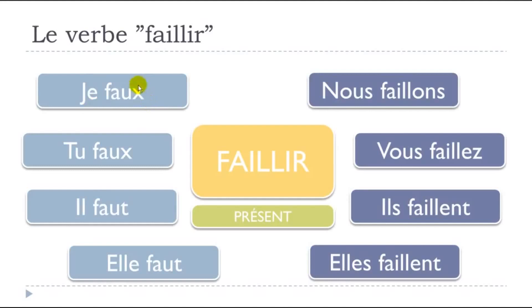So one more time, the present conjugation goes: je faux — remember, there's an x but you don't pronounce it — tu faux, il faut, elle faut, then nous faillons, vous faillez, ils faillent, elles faillent.